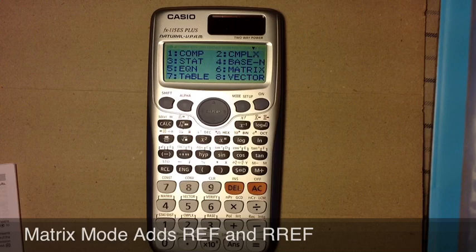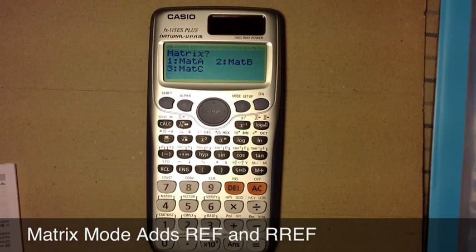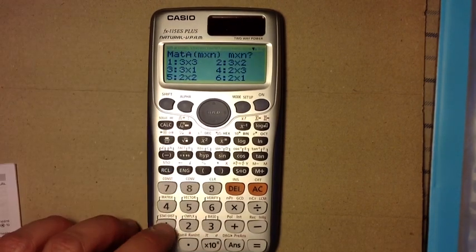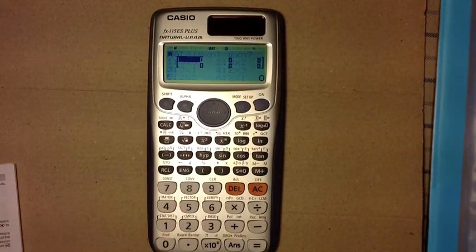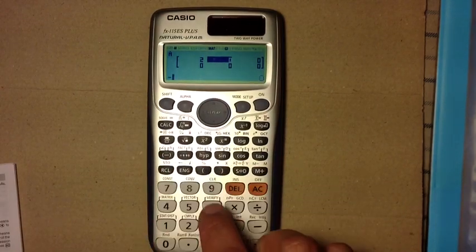You have new functions in the matrix mode as well. You still have your choice of three matrices, up to 3 by 3, which I'm going to choose 2 by 3 to illustrate an example. So, I'm just entering some numbers here.